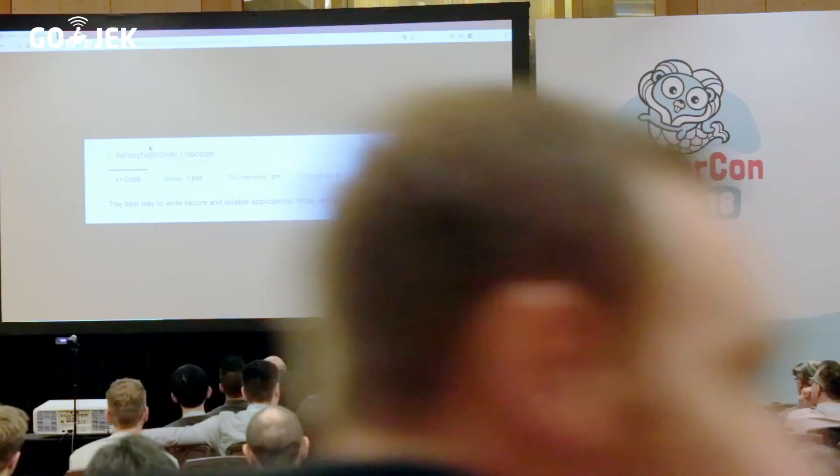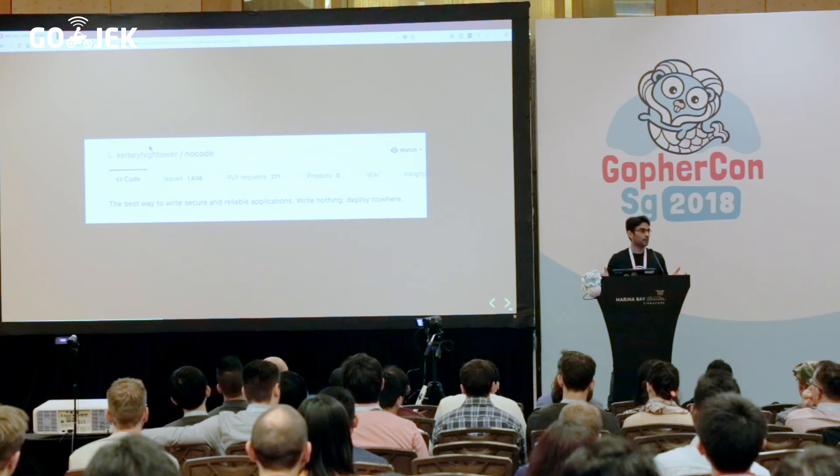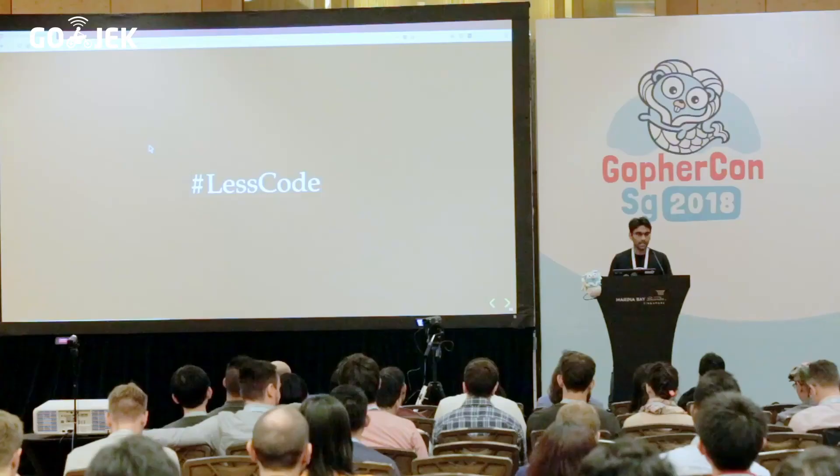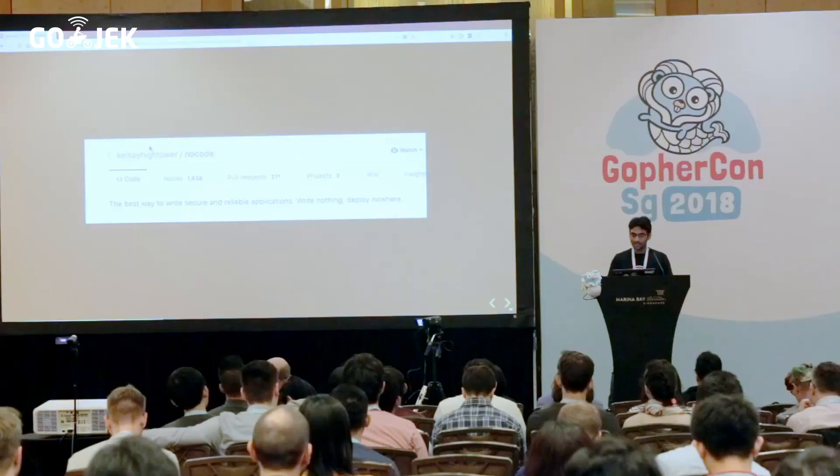Let's start with resiliency pattern zero — as computer science people, we start with index zero. The pattern is: no code. The best way to write secure and reliable applications is to write nothing and deploy them — that repository had a crazy number of stars. But most of us, if we want to run the business, can't just not write code. So what is important is we might have to tend toward something called less code. The more code you have, the more reasons for it to fail. The most resilient piece of code you ever write is the code you never wrote.